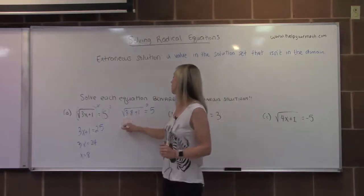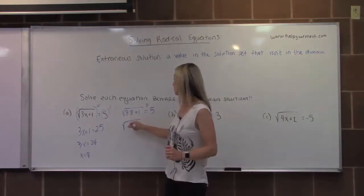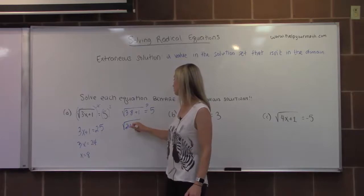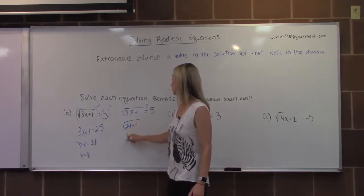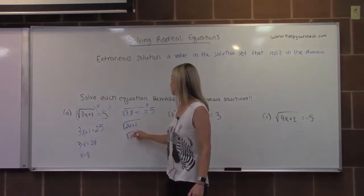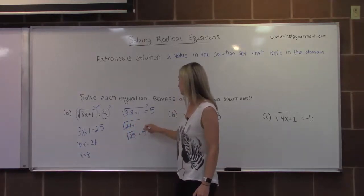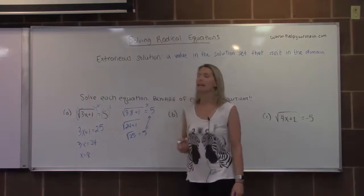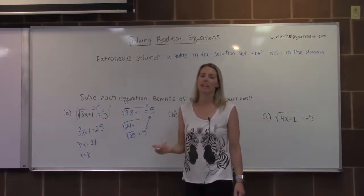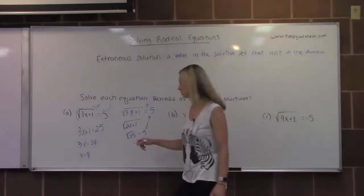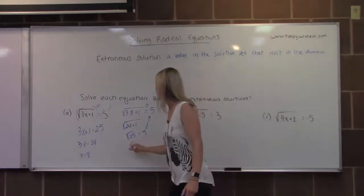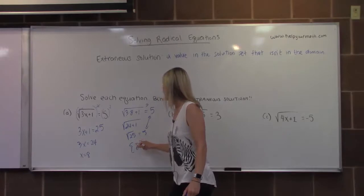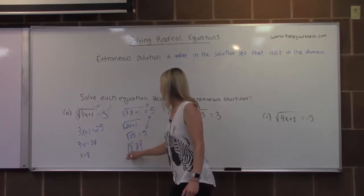Let's simplify the radical: that's the square root of 24 plus 1, which is the square root of 25. The square root of 25 is equal to 5. That confirms that 8 is in fact a solution, so we put 8 in the solution set.